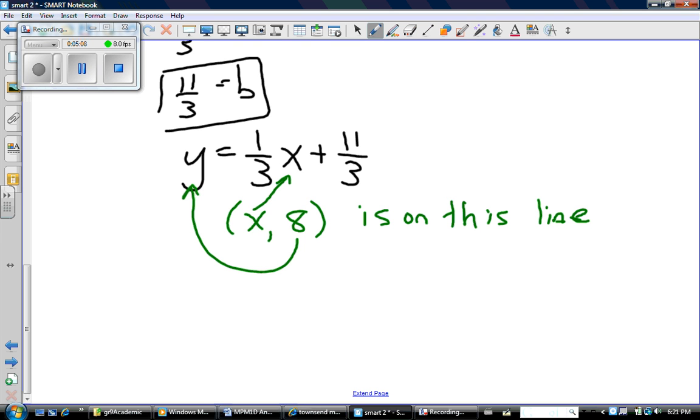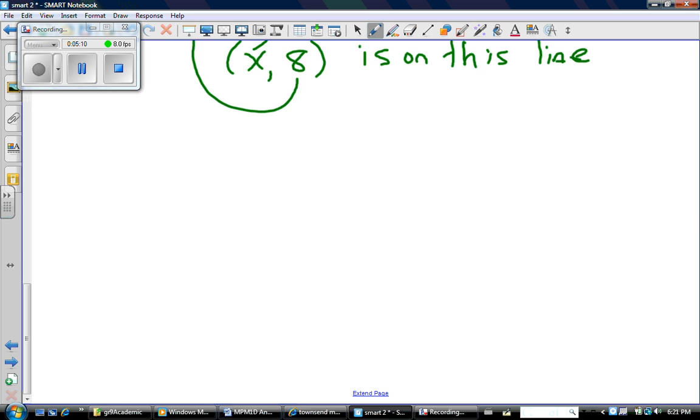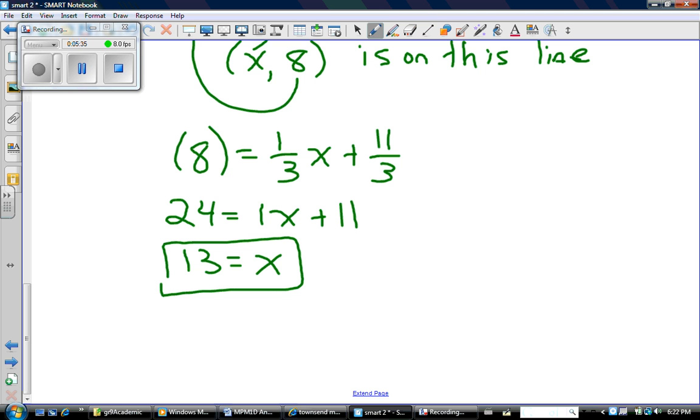So again, it all comes down to simple algebraic solving. So y equals 1/3 x plus 11/3, and again we have to let y equal 8. And now we just solve for x. So this time I'm going to multiply everything by 3 to get rid of those fractions. Subtract 11. I get x equals 13. The question said solve for x. I've solved for x.